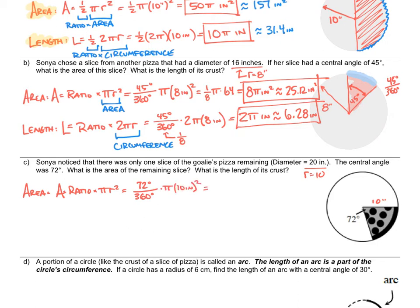So: 72 over 360. You might not recognize that unless you use a calculator — it gives 0.2, which as a fraction is one-fifth. A little trick: if you do 360 divided by 72 on your calculator, you get 5, which means 72 divided by 360 is one-fifth. 10 squared is 100; one-fifth of 100 is 20. So the exact answer is 20π square inches. Multiplying 20 by 3.14 gives 62.8 square inches.